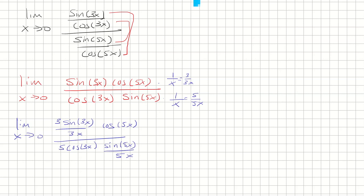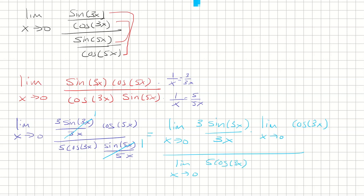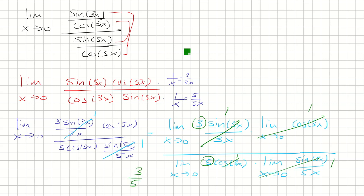Now a bunch of things simplify. Sine 5x over 5x is 1, sine 3x over 3x is 1, and cosine 5x and cosine 3x are also 1 at x approaching 0. Using limit properties, we get 3 times 1 times 1 over 5 times 1 times 1, and that gives us 3 fifths as our final answer.